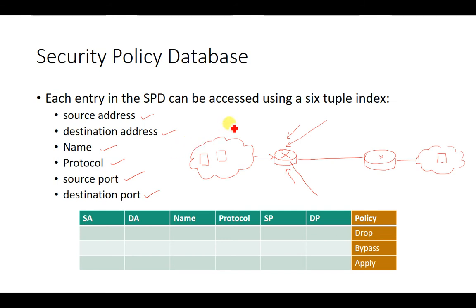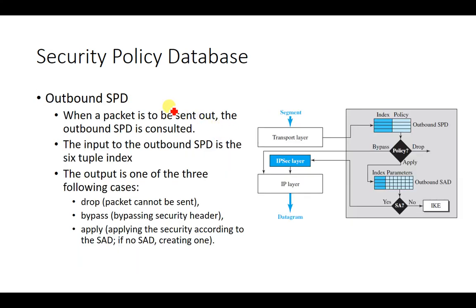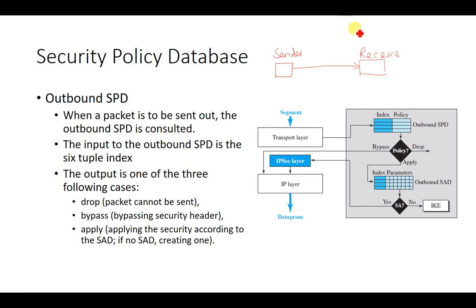According to these six fields we can determine whether a secure connection has been established between the source and destination nodes — whether a security association exists. If there is a security association, we can allow the packet to enter our network. This is how the security policy database is used. Now let us discuss outbound SPD: one node wants to send a packet to another node in another network, and both sender and receiver belong to the same organization with a security association between them using IPsec.